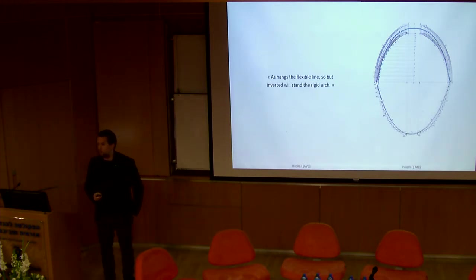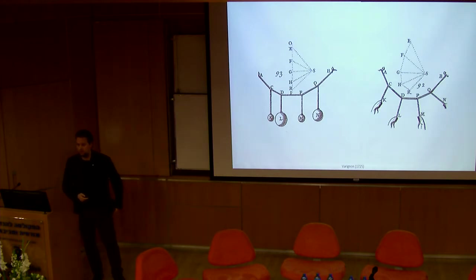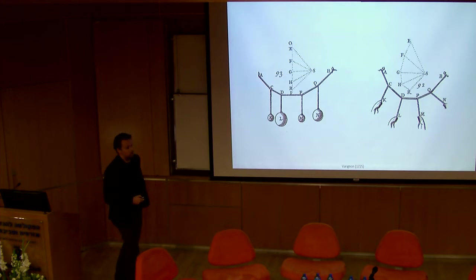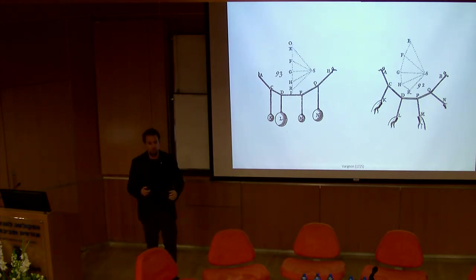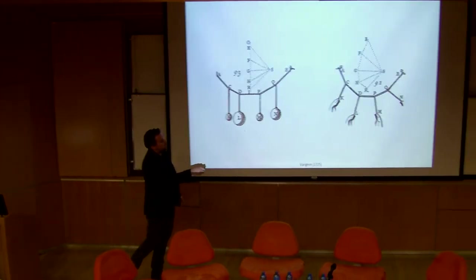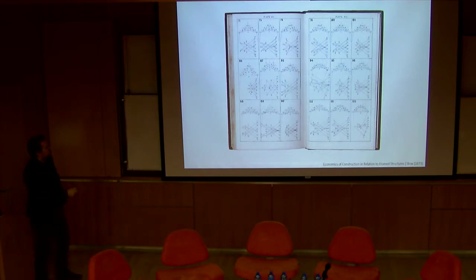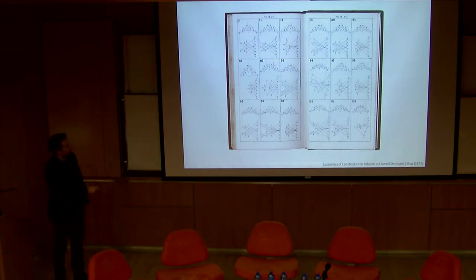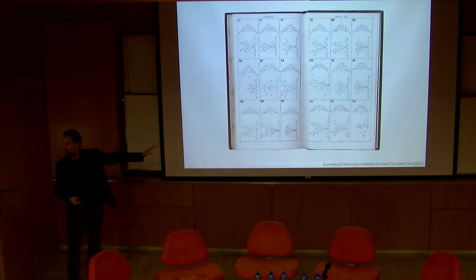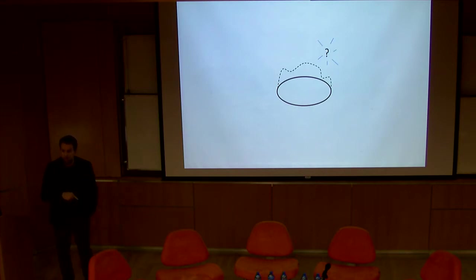To explain these geometries: as hangs the flexible line, so but inverted will stand the rigid arch. It's very painful to make hanging models, so people developed graphical methods to discover these forms. What's important is that designers in the days of master builders didn't just design a geometry, then analyze it, then build it — they were immediately aware of the relation between geometry and the forces in it. This diagram literally represents the forces in the system, so you can measure them. We believe in developing methods that are not black box but as white and explicit as possible.